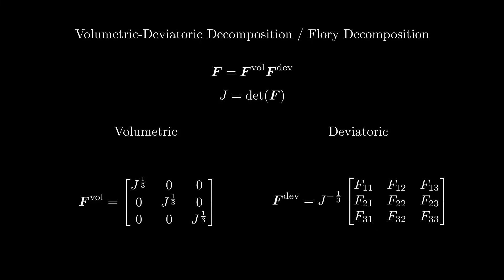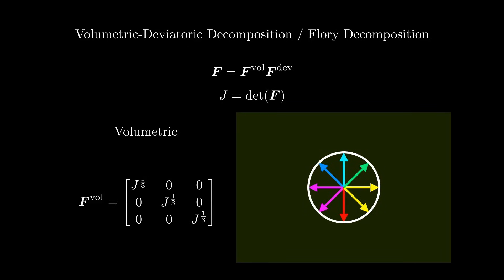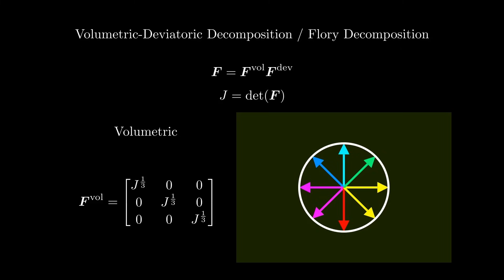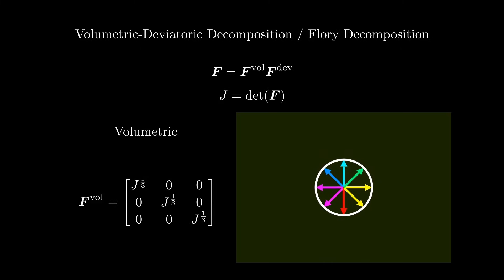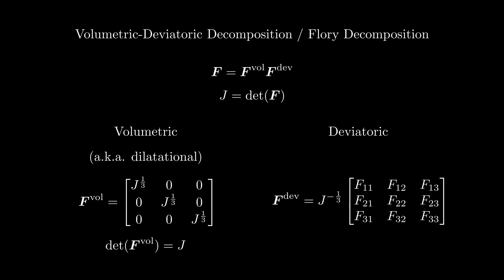Let's take a look at both matrices individually. The first matrix is a diagonal matrix with equal diagonal entries. When we multiply such a matrix with undeformed line elements, all line elements elongate by the same factor and do not change in direction — meaning the deformation is shape-preserving. Such deformations are called volumetric or dilatational. The determinant of F_vol is equal to J, meaning it contains the entire information about the volume change. The second matrix, on the other hand, has the important property that its determinant is 1, meaning the deformation it produces is volume-preserving. Such deformations are called deviatoric, distortional, or isochoric. So we have decomposed F into one matrix describing changes in volume and another describing changes in shape.